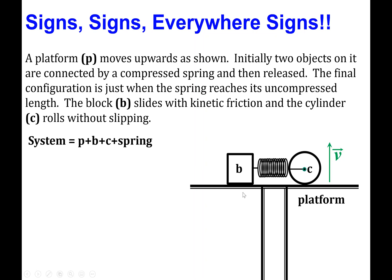A block b, and then a cylinder c, and then a spring that connects b and c. We're also going to take the block to experience friction along this surface, the platform, so there's a kinetic frictional force between the block and the platform.